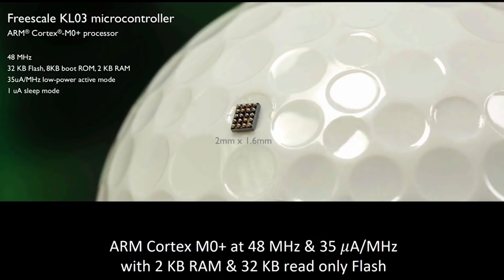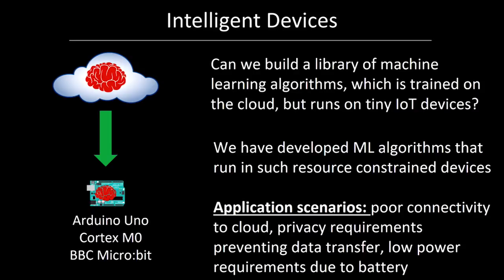I'll switch now to talk about another low-resource problem — this time the low resource is not data, but computational power and memory. That's an ARM Cortex-M0 with a two-kilobyte RAM. You'll find chips of this magnitude in IoT devices all over the world. Today, the common way of using these chips is mostly for communication — sensing and transmitting data via Wi-Fi or Bluetooth. Researchers in the lab have been thinking: can you make these intelligent? Can you actually run machine learning algorithms on these small devices? There are several reasons why you might want to: poor cloud connectivity, privacy requirements, and battery constraints.